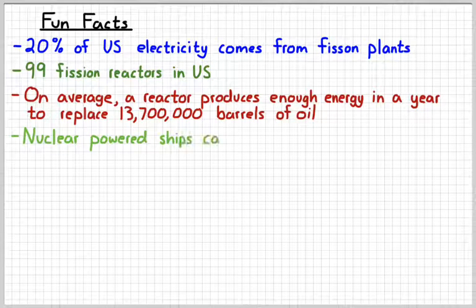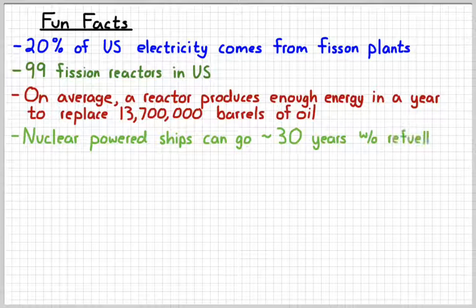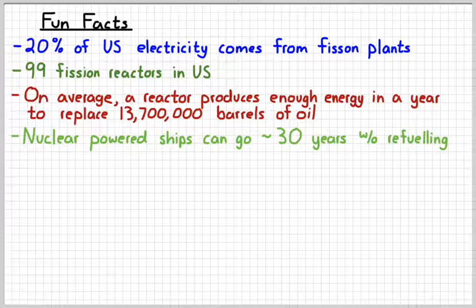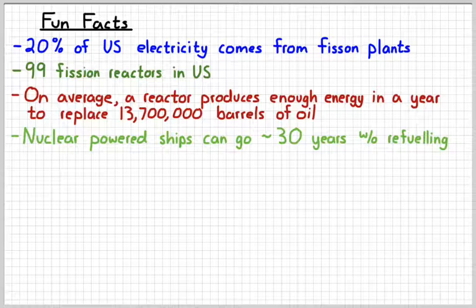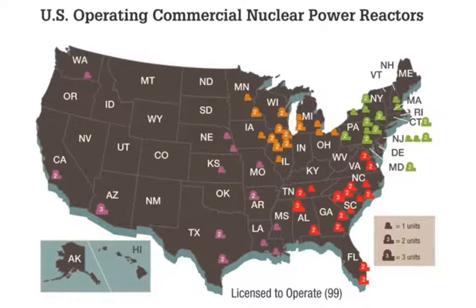Another fun fact, a nuclear powered ship, for instance, an aircraft carrier, could go approximately 30 years without refueling, which is kind of nice. You put some uranium in your boat, you don't have to put any more uranium in it for 30 years. If only I could get one of those for my car. So just for your information, here is a map of the commercial nuclear reactors in the United States. You may notice there's one relatively close to us here in the Dallas area. That's where we get a good amount of our electricity. If you wanted to look that up, that's called the Comanche Peak reactor. It's just a little bit south of here.